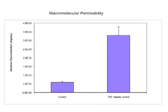This graph shows the dextran absorption in two groups. Compared to controls, the serum dextran concentration was five-fold higher in the TNF-treated mice.